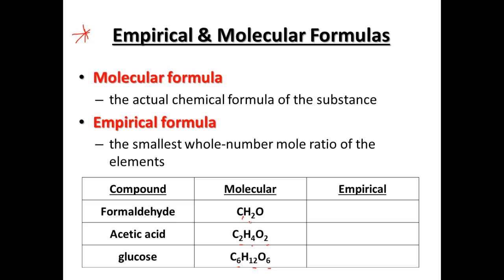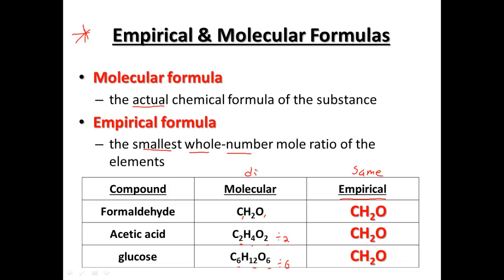With formaldehyde, there's one carbon, two hydrogens, and one oxygen — it's already in its lowest common denominators. Acetic acid C2H4O2 could be reduced if we divide it all by 2. And C6H12O6 — if you divide each number by 6, you can reduce them down. So the empirical formula is the smallest whole number ratio, not the actual formula — that would be molecular. When acetic acid is reduced down: CH2O. When glucose is reduced down: CH2O. So all three of these have the same empirical formula CH2O but different molecular formulas.